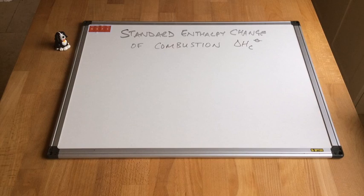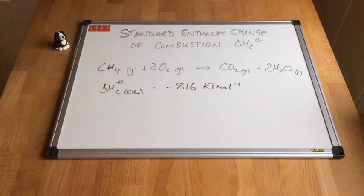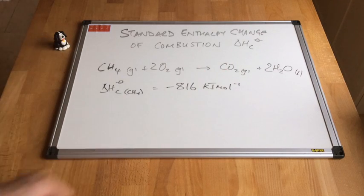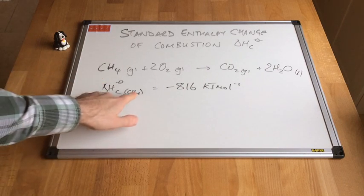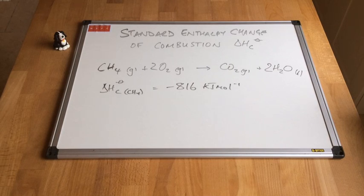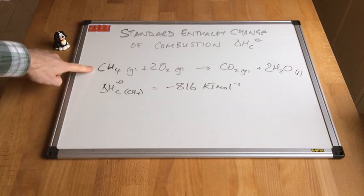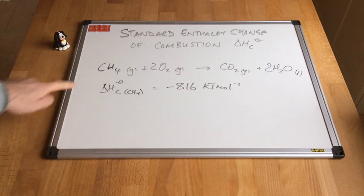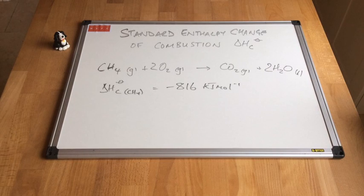The next standard enthalpy change is the standard enthalpy change of combustion, with the symbol delta H C standard. A very common example is the combustion reaction for methane. The balanced chemical equation with correct state symbols shows one mole of methane completely reacting with oxygen — complete combustion — where carbon fully reacts with oxygen forming carbon dioxide, and hydrogen fully reacts forming water.